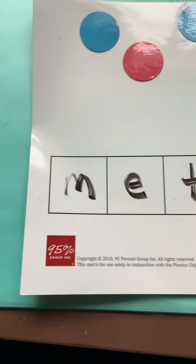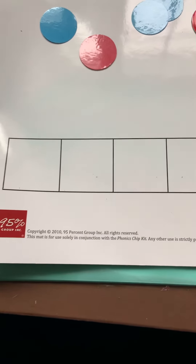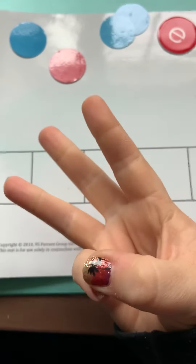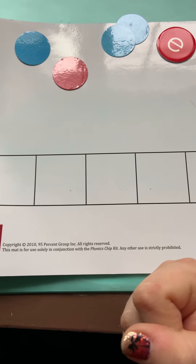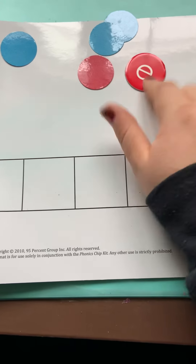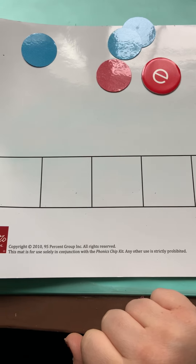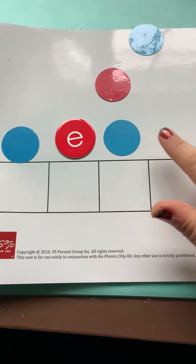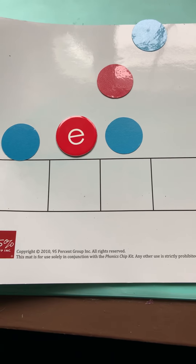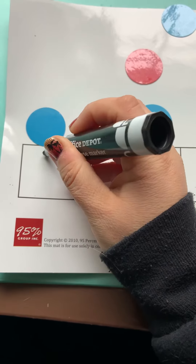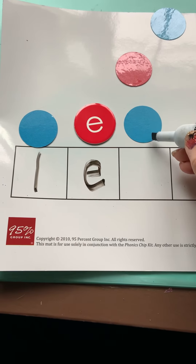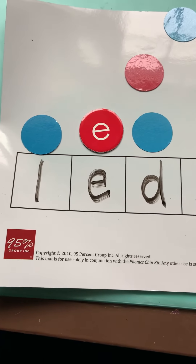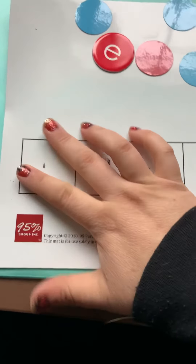The next word is 'led'. Say the word. Good. Now finger stretch the word led. Good. What's the vowel sound? 'Eh' — so which vowel chip am I going to use? The E chip. Ready, let's pull down the chips: A, D — led. Now let's spell the word: A, D. I want you to try to spell the words before I do — kind of like a little race.